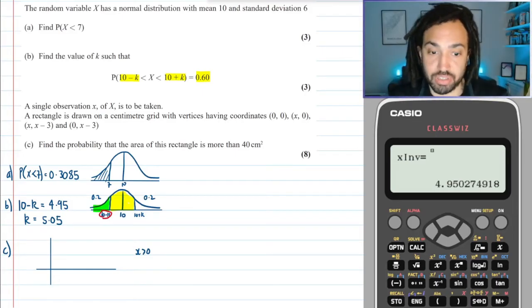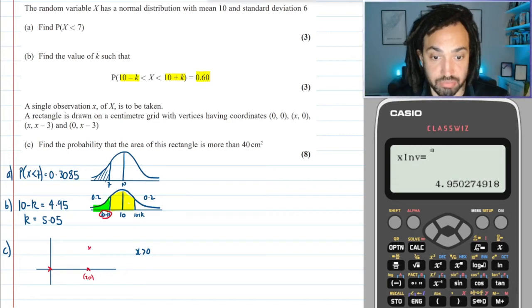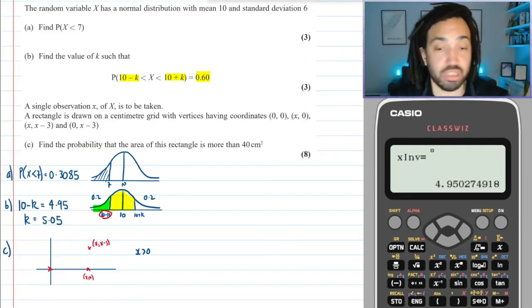It might not be, but just so I get a quick sketch—remember, if it's tricky, draw picky. So I'm definitely going to have (0,0), I'm going to have (x,0), I'm also going to have (x, x-3), and then finally (0, x-3). So my rectangle is going to look like this.